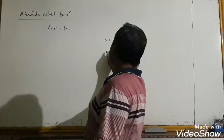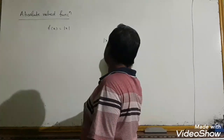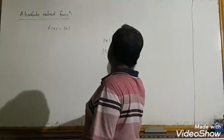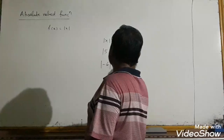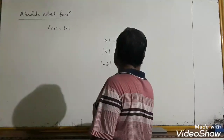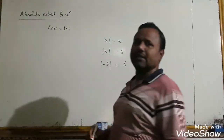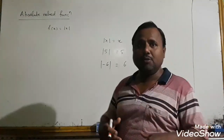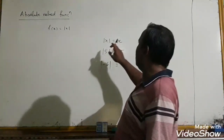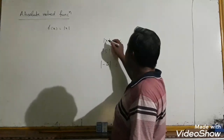For example, what is mod 5? It is 5. What is mod(-6)? We get 6.